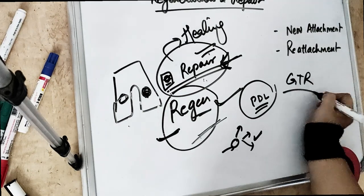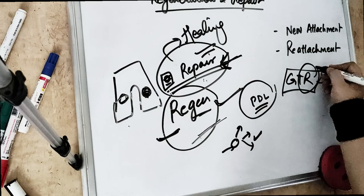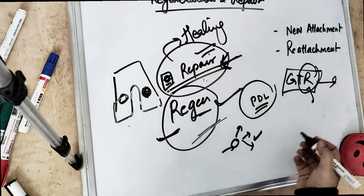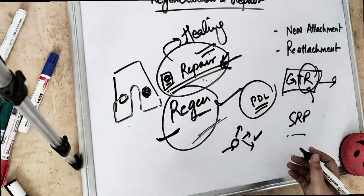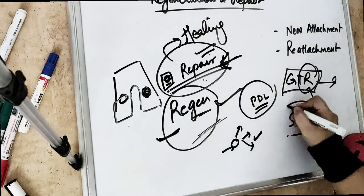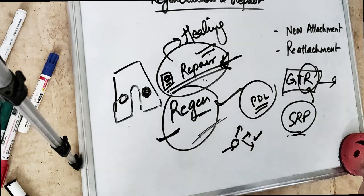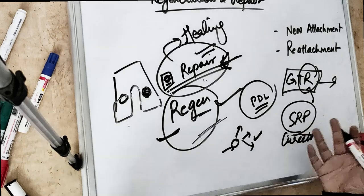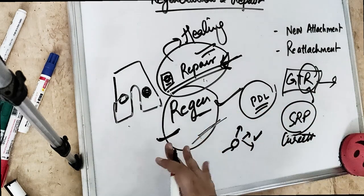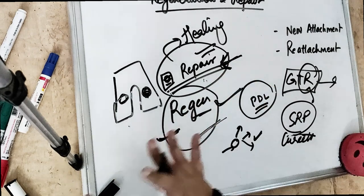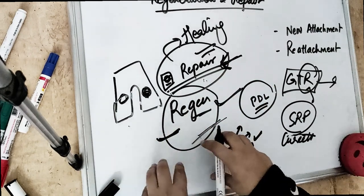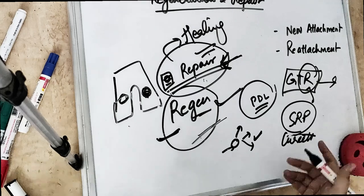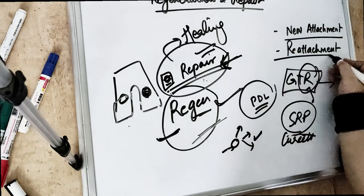GTR - guided tissue regeneration - is a regeneration procedure, as the name suggests. Repair procedures include SRP (scaling and root planing), curettage, flap surgeries, gingivoplasty - all these can bring tissues back to normal, but not in the previous state. The tissues are not going to be the same as they were previously. So we have two new terms: new attachment and reattachment.